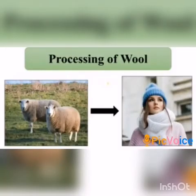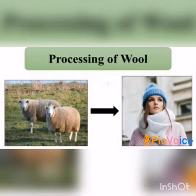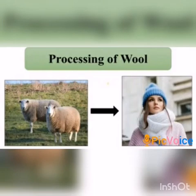Processing of wool. The wool obtained from the sheep is not directly used to make woolen clothes. It has many steps in the processing of wool. Once the reared sheep have developed a thick growth of hair, the hair is shaved off for getting wool. It is then processed into wool using different processes. We will see these steps one by one.